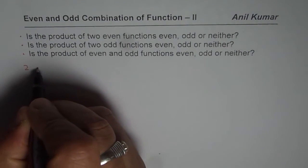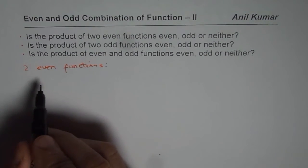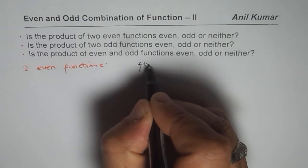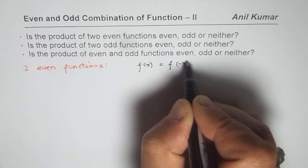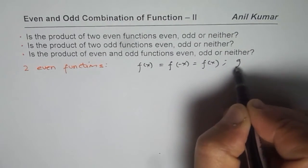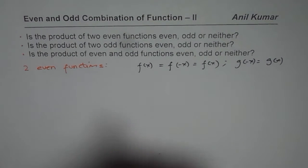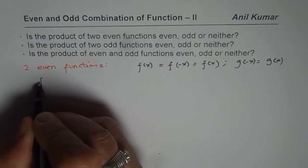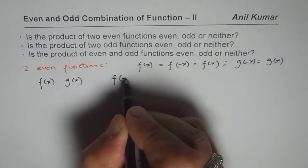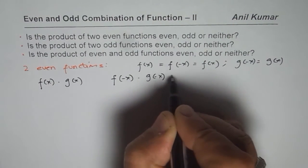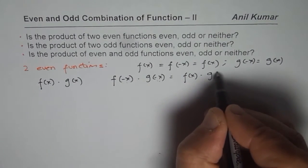Let us consider two even functions and see if their product is even, odd, or neither. Both the functions we are considering are even. Let us say f of x is even, which means f of minus x is equal to f of x. And if g of minus x is equal to g of x, that means it is even. So that is our definition of even functions.